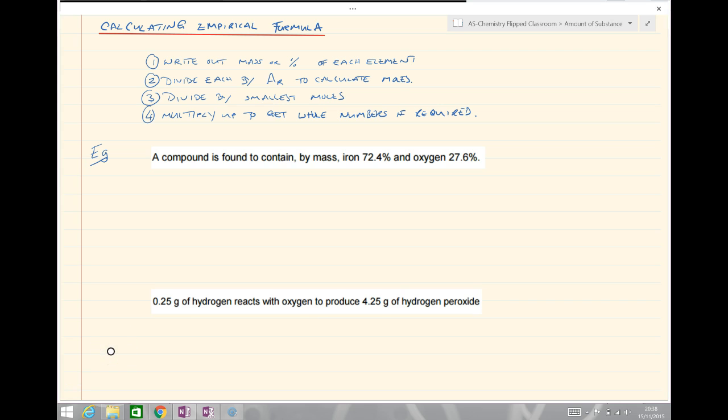We said before that the empirical formula is the simplest whole number ratio of each element in a molecule. What that means is, to work out the empirical formula, we have to ratio the number of moles of each atom in a molecule. There's four relatively straightforward steps. If we follow these steps then we can work out the empirical formula. It's very similar to the method for water of crystallization, but there we were using molecules, here we're using atoms.